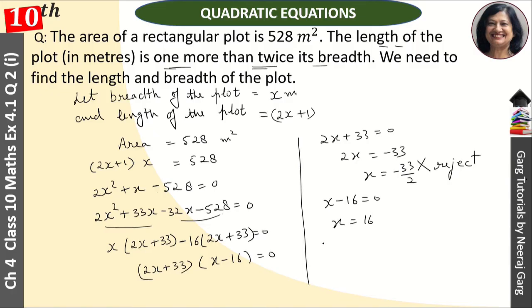It means our breadth is 16 meters. And the length is 2x plus 1, which equals 2(16) plus 1, which equals 33 meters. This is our answer.